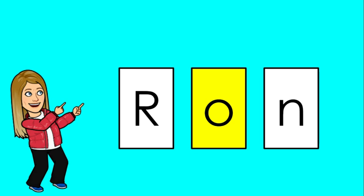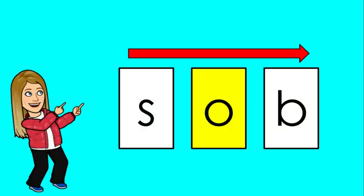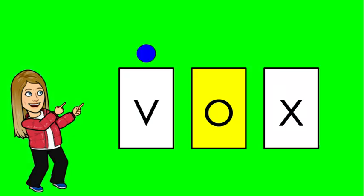That R is an uppercase R because that's the name of someone. S, ah, b—sob. V, ah, x—vox.